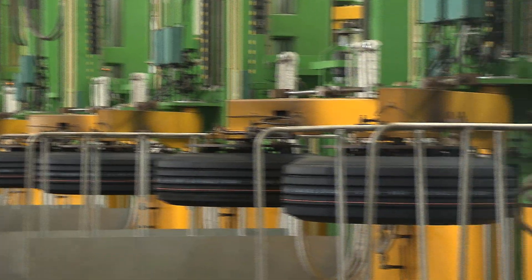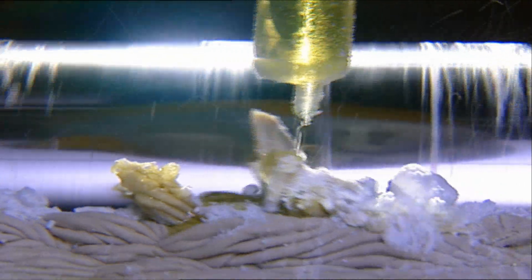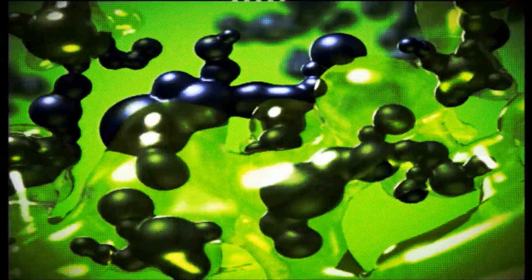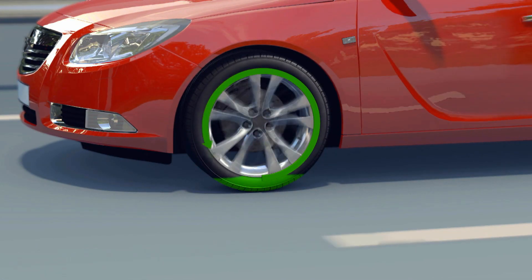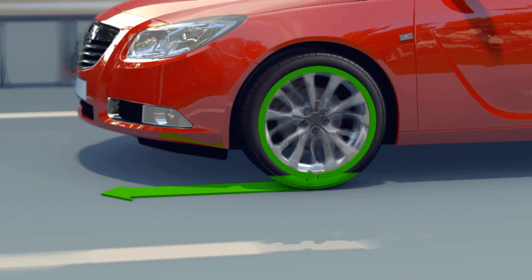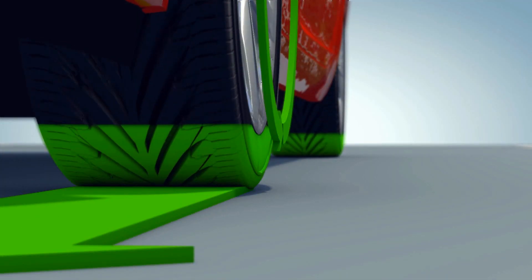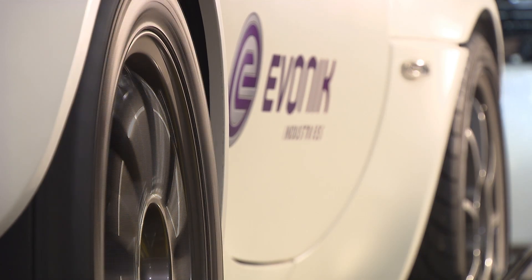An organosilane coupler ensures that the components of the mix of rubber, silica and carbon black are firmly bound to one another. This can reduce rolling resistance by as much as 40% while driving, which corresponds to fuel savings of up to 8%.